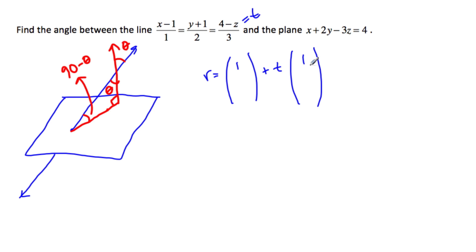y will be, multiply by 2, subtract 1. So y will be minus 1 plus 2t, multiply by 3, subtract 4, and then multiply it by a negative. So instead of negative 4, it'll be plus 4, and a minus 3.